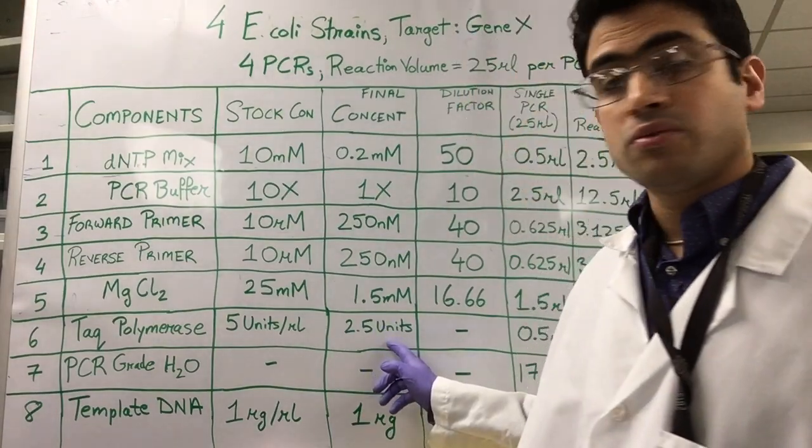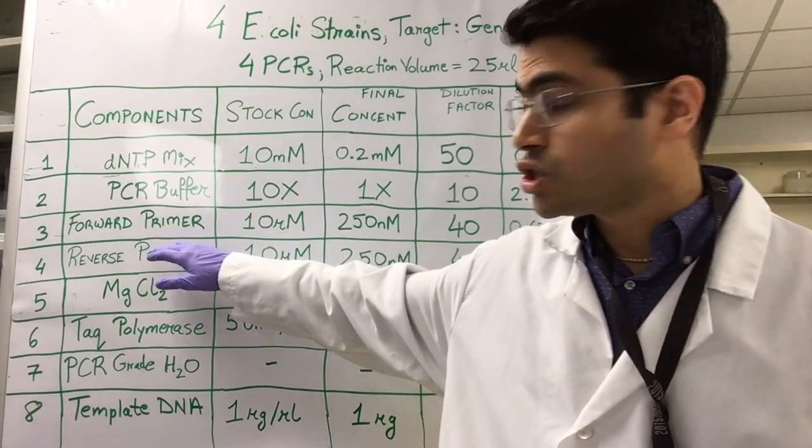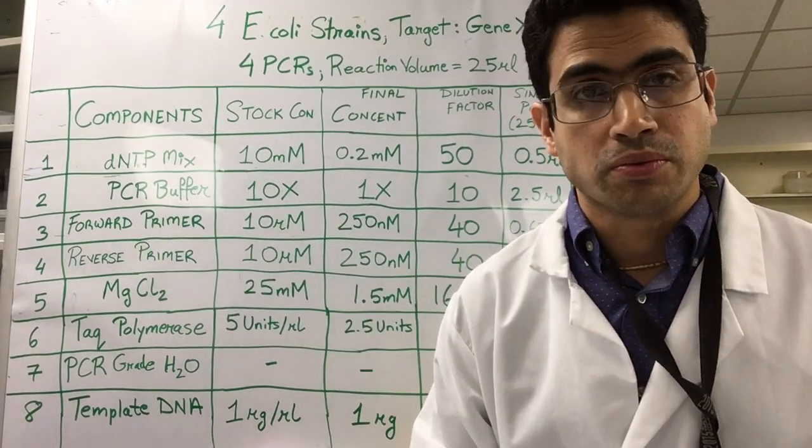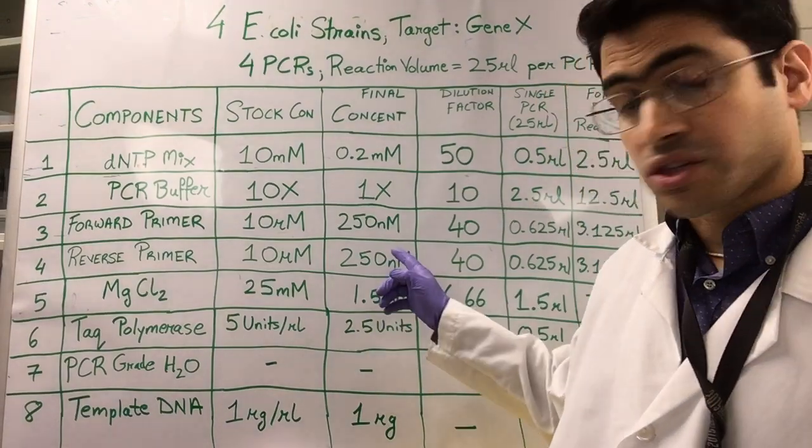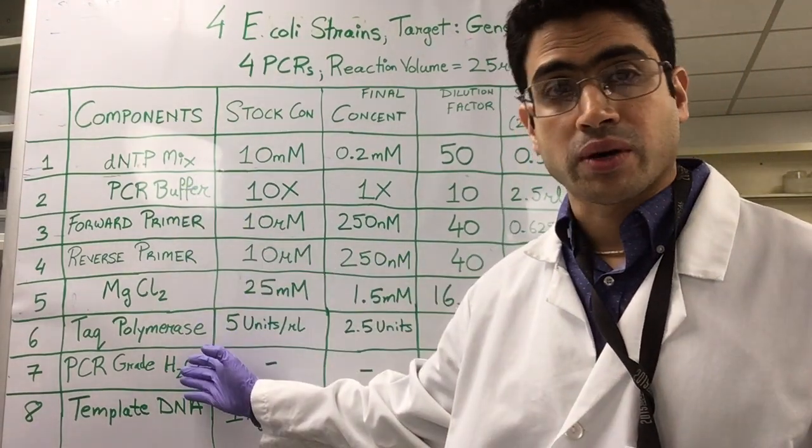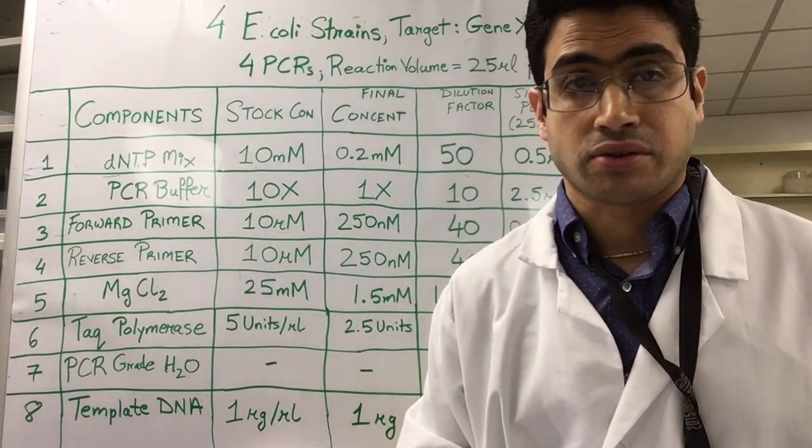This column over here shows you the final concentrations that I want each of these components to be at in an individual PCR tube. So what I need to determine is what volumes do I take of these working stocks and add to an individual PCR tube.